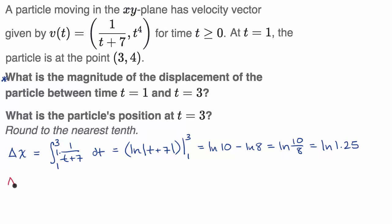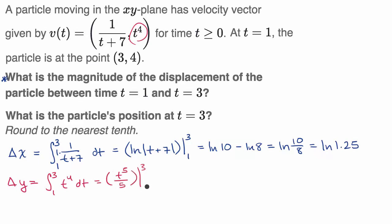Now let's figure out our change in y. We take the integral from one to three of t to the fourth dt. Using the reverse power rule, this gives t to the fifth over five evaluated at three and one. That's 243 over five minus one fifth, which equals 242 over five, which is 48.4.